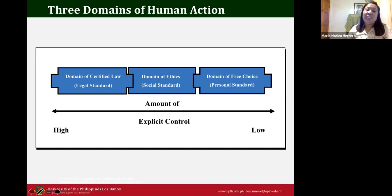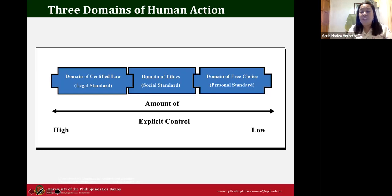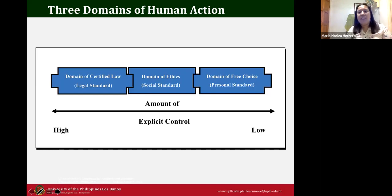For businesses, there is a moderate degree of control under the domain of ethics. Under the domain of free choice, there is a low degree of explicit control — this is the personal standard. We are all bounded by rules because without them, there would be lawlessness or chaos.